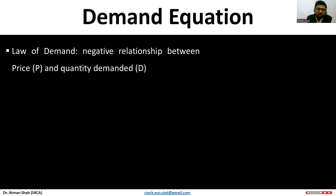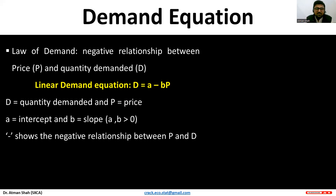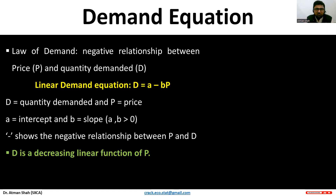We know that there is an inverse relationship between price and quantity demanded, or a negative association between these two variables. So the linear demand equation is: D is equal to a minus b times p, where D is quantity demanded, p is price, a is the intercept, and b is the slope of the demand curve. This negative sign shows that we have an inverse relationship between price and quantity demanded, so demand is a decreasing linear function of price.